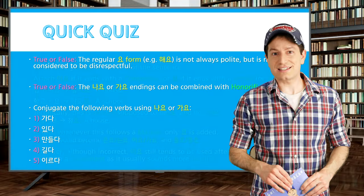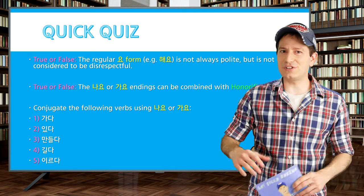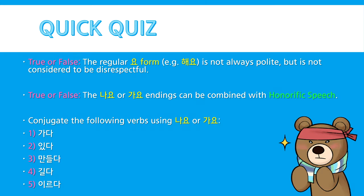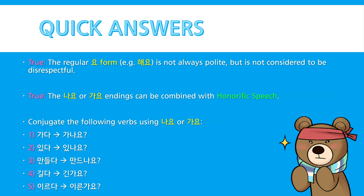Alright, before we go over some last notes, try to take this quiz. You can pause the video here and then resume when you're ready. Here are the answers. First, true — the regular 요 form, so 해요, is not always polite, but it's not considered disrespectful. The next one is also true — the 나요 or 가요 endings can be combined with honorific speech. For the conjugations: 가다 becomes 가나요, 있다 becomes 있나요, 만들다 becomes 만드나요, 길다 becomes 긴가요, and 이르다 becomes 이른가요.